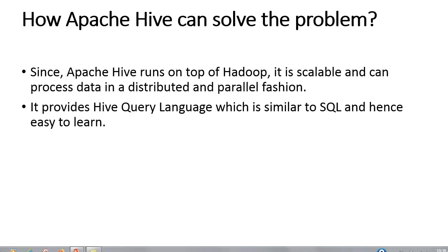The features that convinced NASA's JPL team to include Apache Hive as an integral part of their solution strategy were: first, since Apache Hive runs on top of Hadoop, it is scalable and can process data in a distributed and parallel fashion; second, it provides HiveQL, which is similar to SQL and hence easier to learn for their programming team. Let us now see how NASA deployed Hive in their RCMES system.